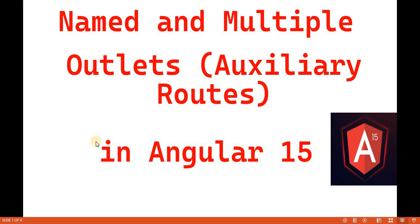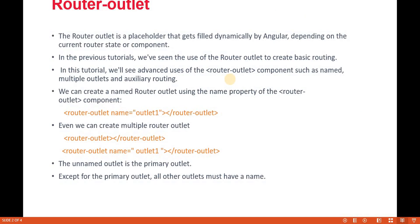In the previous videos we discussed about routes, child routes, router link, and the right route link. Now in this video we will discuss about multiple outlets. Whenever we redirect from one page to another and give the router link, we give the router outlet as well. This router outlet is basically a placeholder which gets filled dynamically by Angular depending on which component we navigate to.